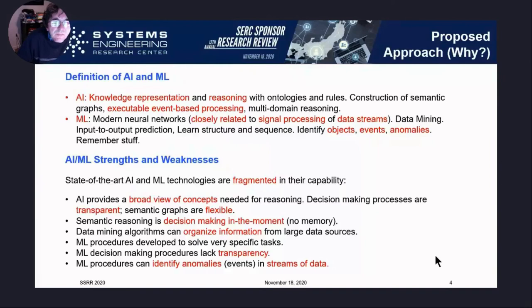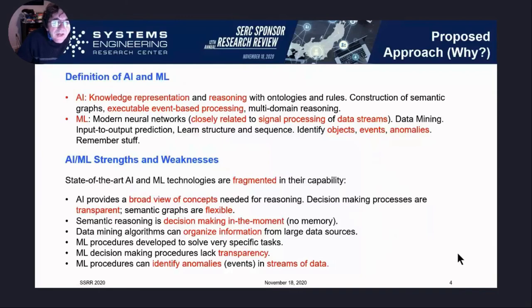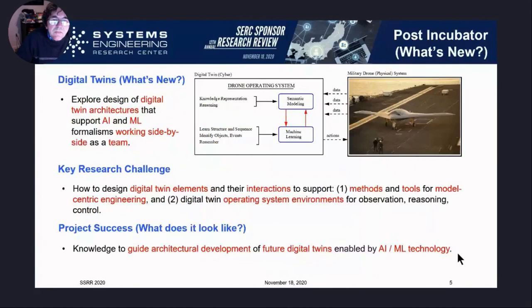On the machine learning side, we're talking about neural networks, which are closely related to signal processing, data mining, learning structures of sequences, identifying objects, events, and anomalies, and remembering things. You can train a neural network to identify 100 different species of flowers, or train machines to remember sequences and streams of data and identify anomalies. However, if you want to understand how these machine learning algorithms are working, the state of the art is they definitely lack transparency. They provide complementary services but don't naturally fit together.